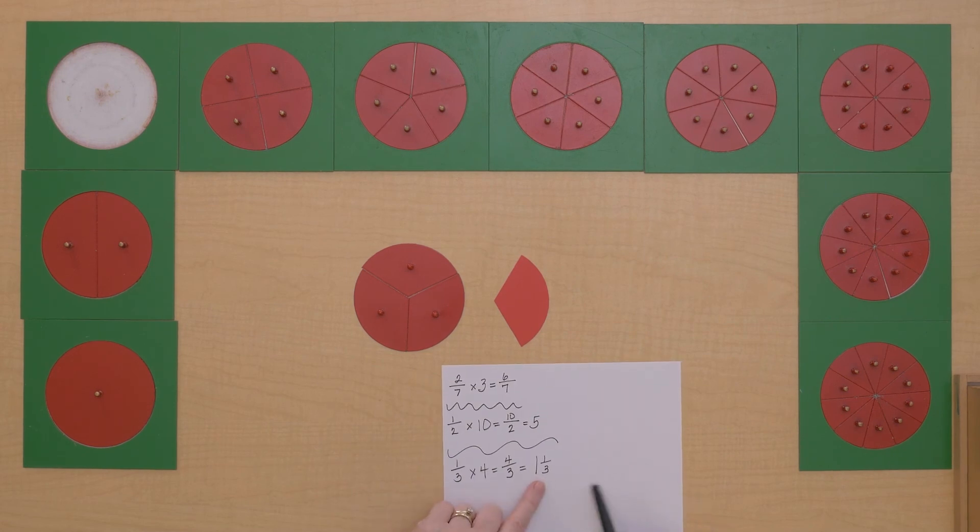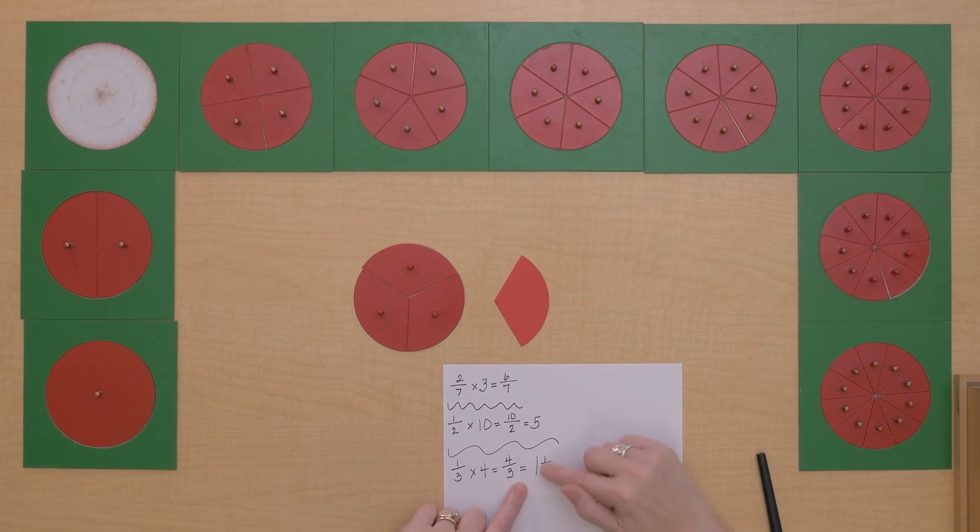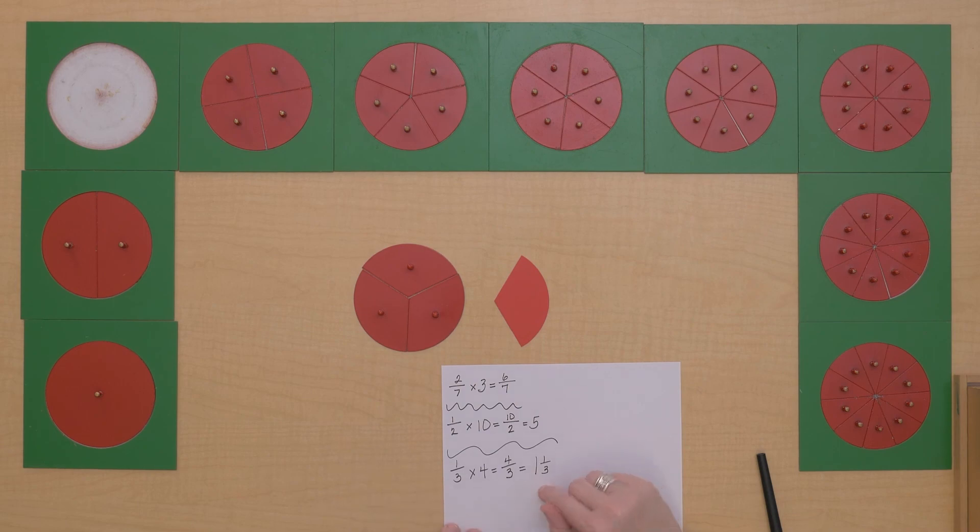Now when we have a whole number alongside a fraction, this is called a mixed number. And when we write a mixed number, we try to make sure the whole number is the same size as the fraction and that fraction line is right in the middle of the whole number as we're writing it. So sometimes we convert an improper fraction into a mixed number. Let's do some more multiplication.